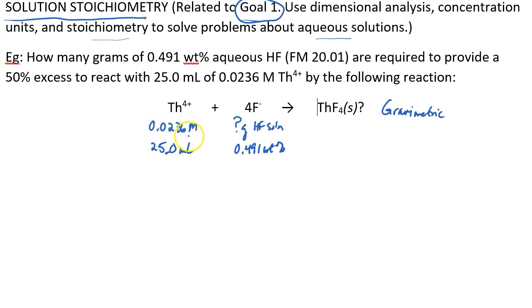So let's begin with this thorium-4 concentration: 0.0236 moles of thorium-4 per liter of solution, and we have 25 mL, which is 0.0250 liters of solution. So that would tell us how many moles of thorium-4 we have.